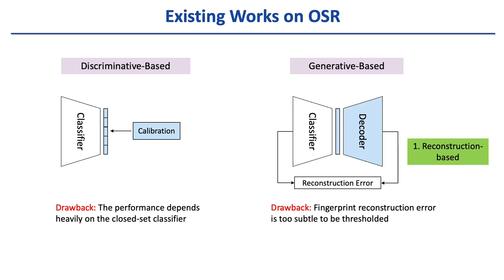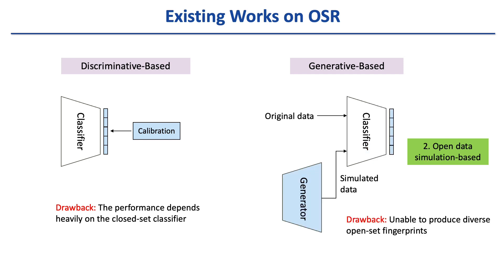From the generative line, some works threshold the reconstruction error as an open set indicator. However, for the open set model attribution problem, fingerprint reconstruction error is too subtle to be thresholded. Other works directly simulate the open data for training, but these generators are mainly used to generate lower-level semantics and struggle to produce diverse open set fingerprints due to their fixed width and architecture.